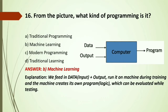MCQ: From the picture showing a computer with inputs 'data' and 'output' producing a 'program,' what kind of programming is it? Options: A) Traditional programming; B) Machine learning; C) Modern programming; D) Traditional learning. Traditional programming provides data and a program, with output coming from it. In machine learning, we feed in data and output during training, and the machine creates its own logic or program, which is evaluated while testing. Answer: Machine learning.